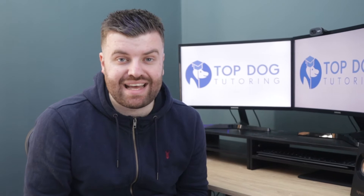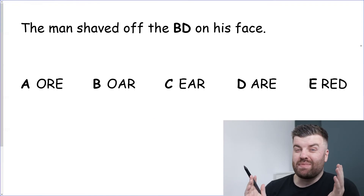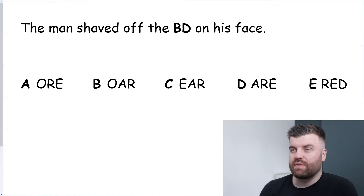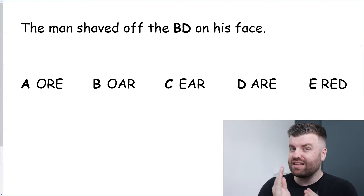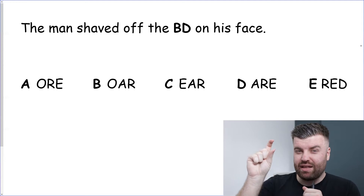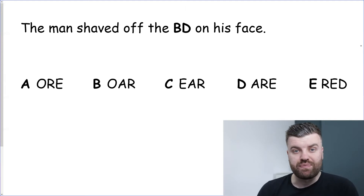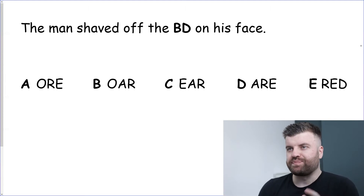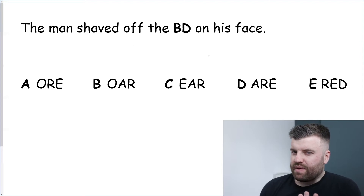We're going to take a look at a question type today that we like to call 'Three Missing Letters.' In this question type, it's our job to read the sentence we've been given. For example: 'The man shaved off the BD on his face.' That word in capital letters isn't really a word — three consecutive letters have been taken out, leaving us with BD. Our job is to figure out what those three letters are from five options given.